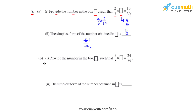Moving to part B of question number 8, the first bit asks us to provide the number in the box such that the product of 3 over 5 and the number in the box is 24 over 75. To get the numerator as 24, we multiply 3 by 8, and to get the denominator as 75, we multiply 5 by 15. So the number in the box is 8 over 15.